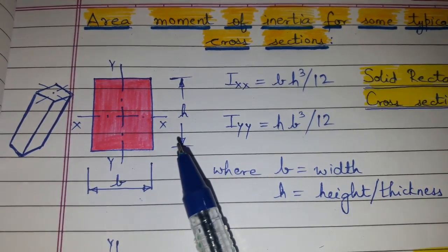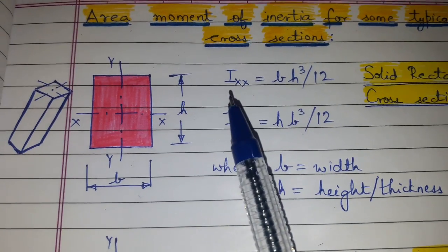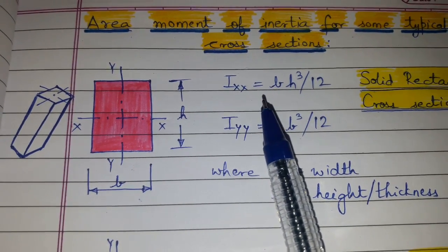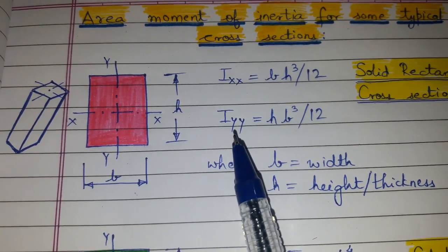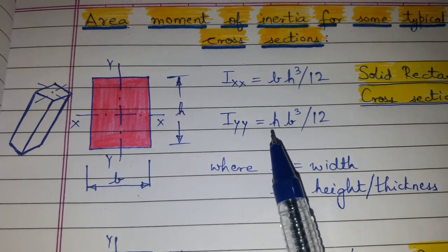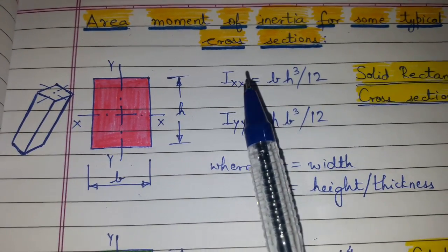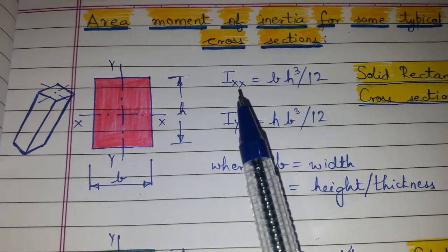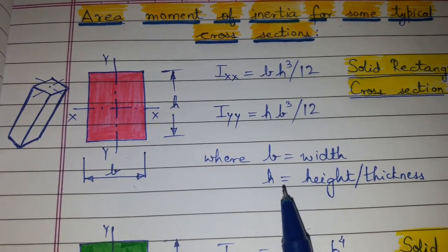And h is the height or thickness of the cross-section of the column. Ixx will be equal to bh³ divided by 12. Iyy is equal to hb³ divided by 12. This is the moment of inertia Ixx and Iyy where b equals width and h equals thickness or height.